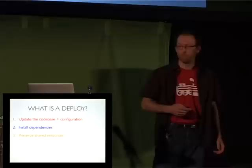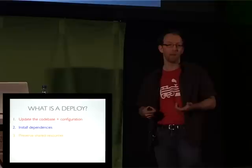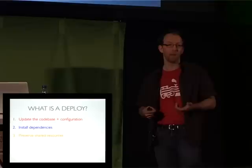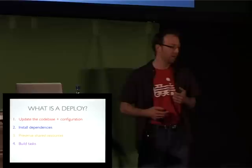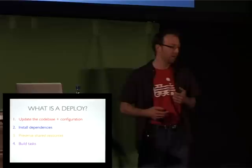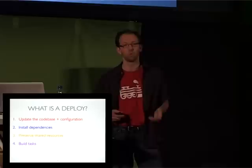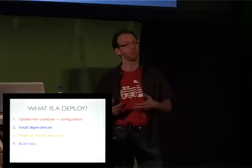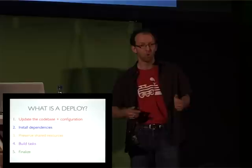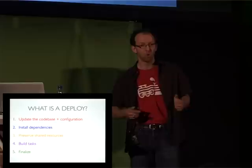Step three is preserving shared resources — basically pointing the locations in your project that need to be maintained, like the sessions folder or the uploads folder, to the shared folder so they stay preserved. And finally, in step four, you'll have some build tasks — compiling LESS or SASS, maybe — anything you want to run as a process after your code base is complete and all dependencies are there. When everything works, step five is finalize, which boils down to pointing the symlink to the latest release.